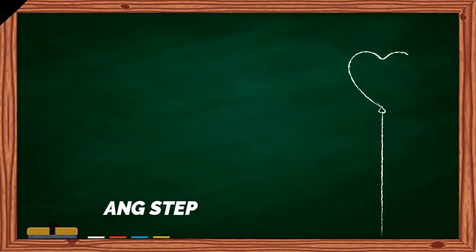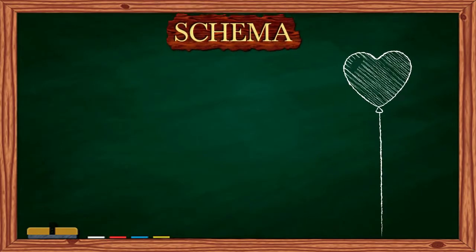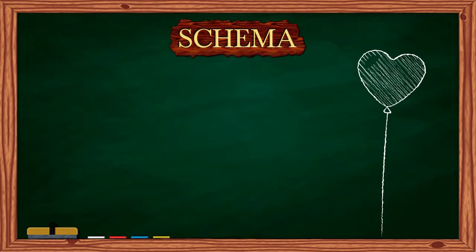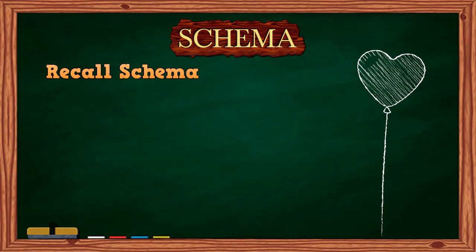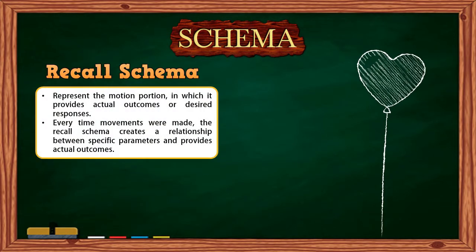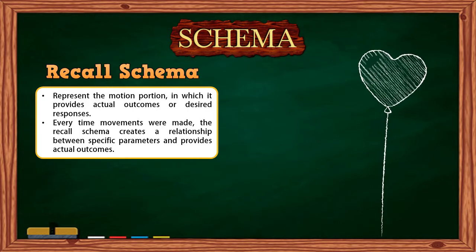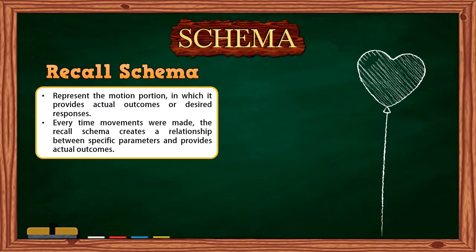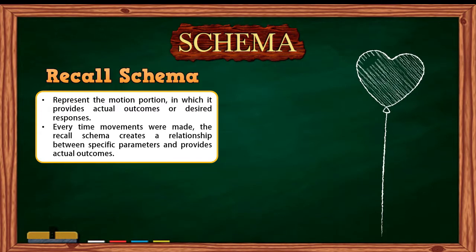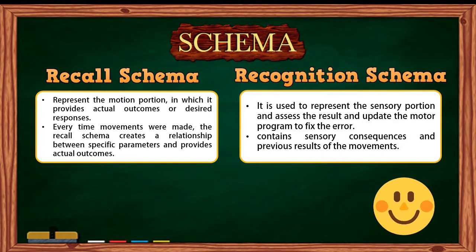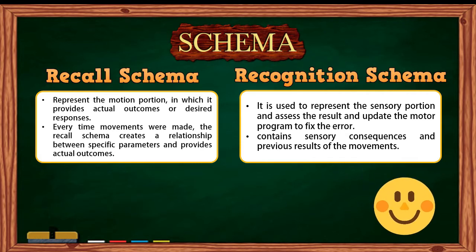These four elements are eventually absorbed into a schema in two sections, and the motor programs contain both. Recall schema is the first section, used to represent the motion portion, providing actual outcomes or desired responses. Every time movements are made, the recall schema creates a relationship between specific parameters and provides actual outcomes. The second section is the recognition schema, which is used to represent the sensory portion and assess the result, updating the motor program to fix errors.